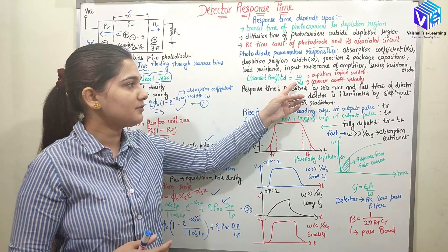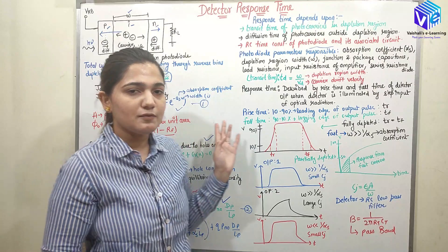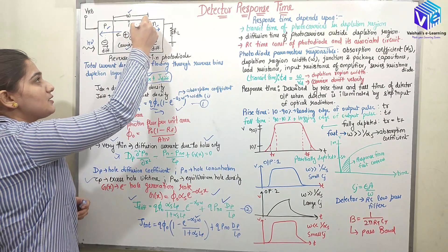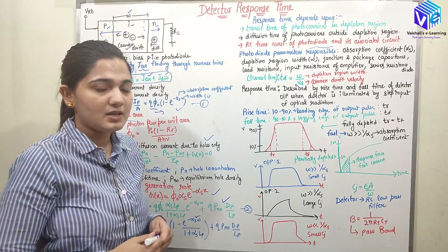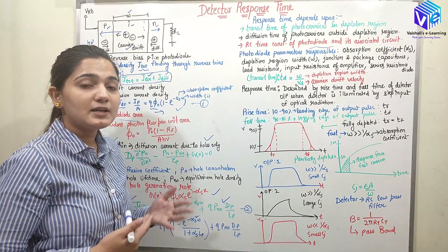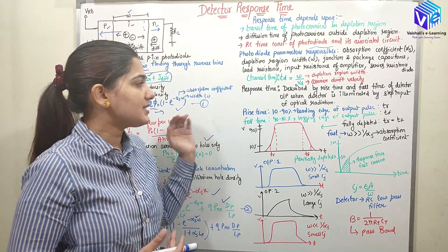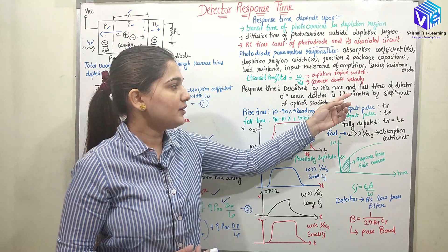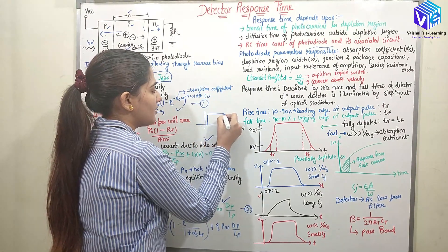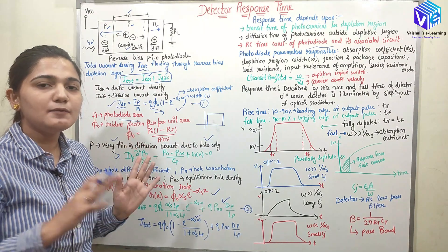The transit time is given by the formula W/vd, where vd is the carrier drift velocity and W is the depletion region width. In some cases the full I region is made into the depletion region, in other cases it is not. We will see all cases — what happens with higher or lesser input capacitance — and observe how the output changes with the help of rise time and fall time. We illuminate the photodiode with a step input and observe the outputs.